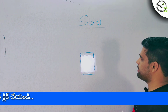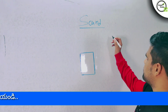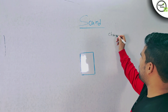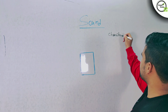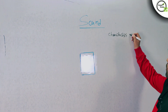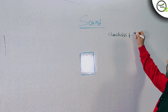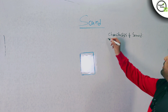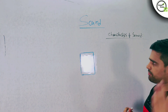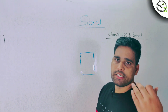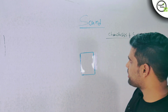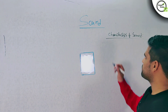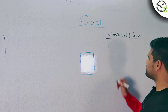Let's talk about sound. I'm talking about the characteristics of sound. The major important topics are: characteristics of sound, ranges of frequency, sonar, and other important topics. First thing: characteristics of sound.